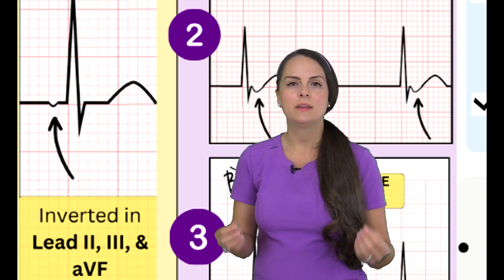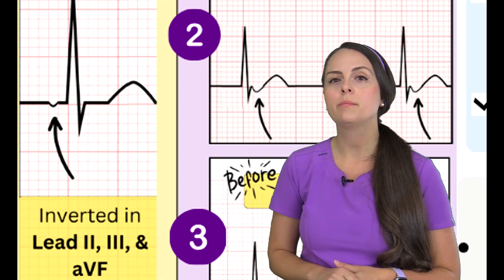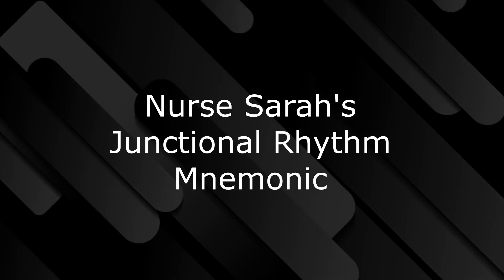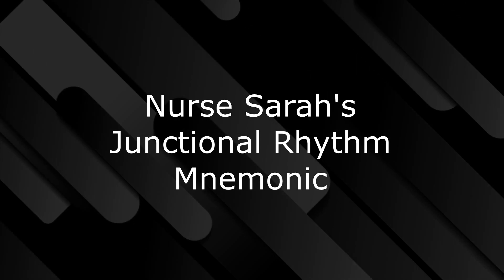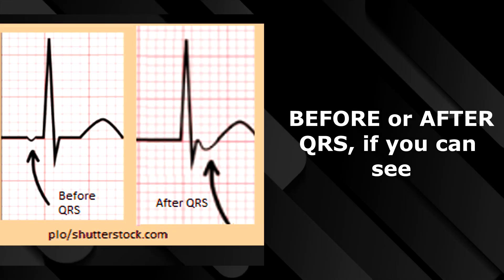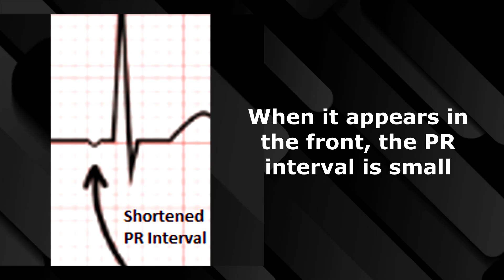When looking at the P wave in leads II, III, and AVF, it will appear upside down — inverted. To help remember this information about the peculiar P wave in this rhythm, here's a little jingle: 'Inverted P on AVF, two and three, before or after QRS if you can see. Sometimes it hides and you can't see it at all. When it appears in the front, the PR interval is small.'